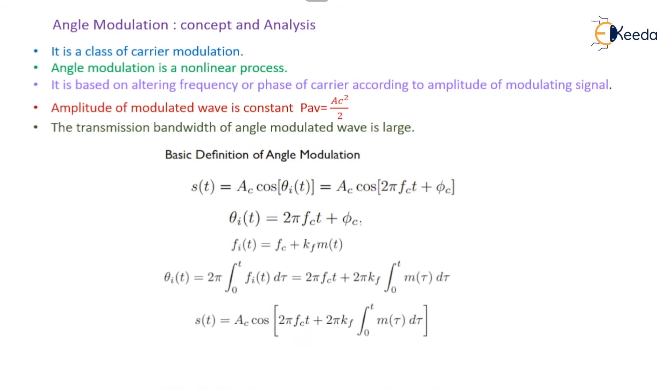Now if we apply it for the FM wave, that means if an angle modulated wave is an FM wave, then the equation is fi(t) = fc + kf × m(t). Now here in this case, θi(t) = 2π ∫₀ᵗ fi(τ) dτ = 2π fc t + 2π kf ∫₀ᵗ m(τ) dτ.